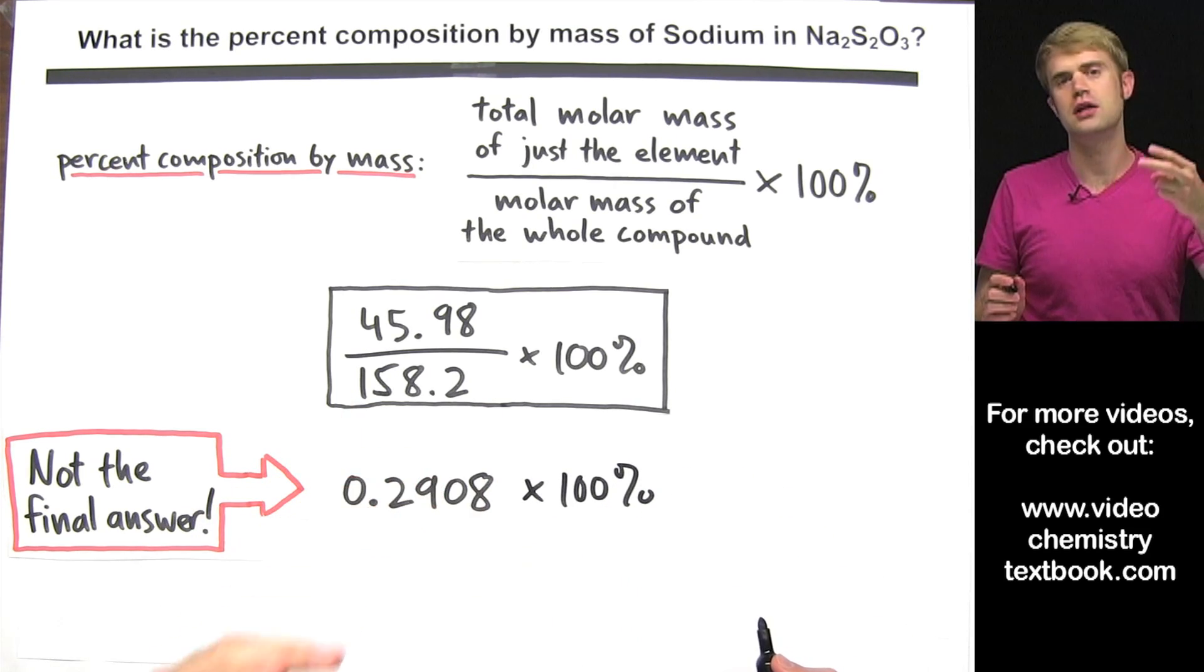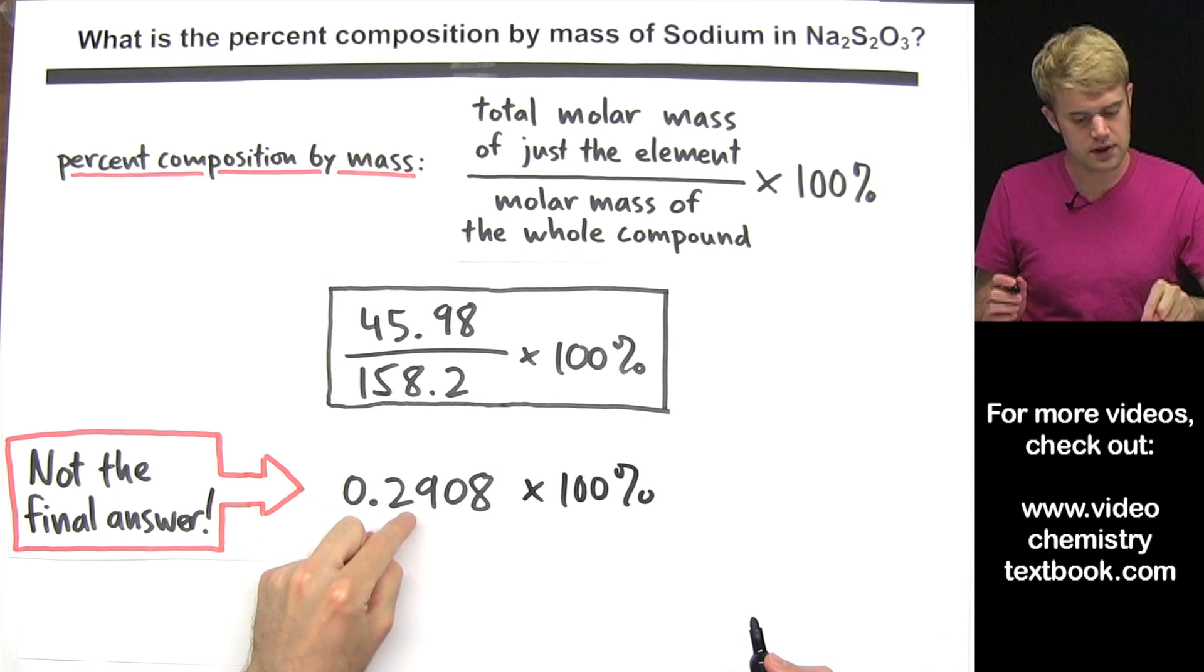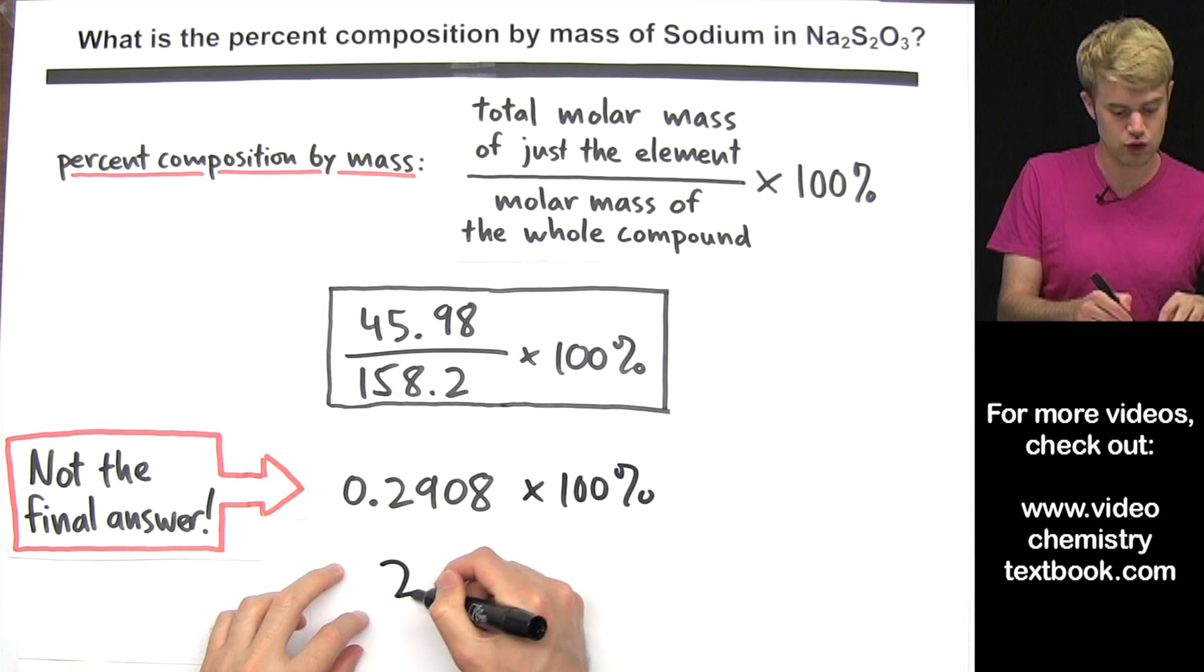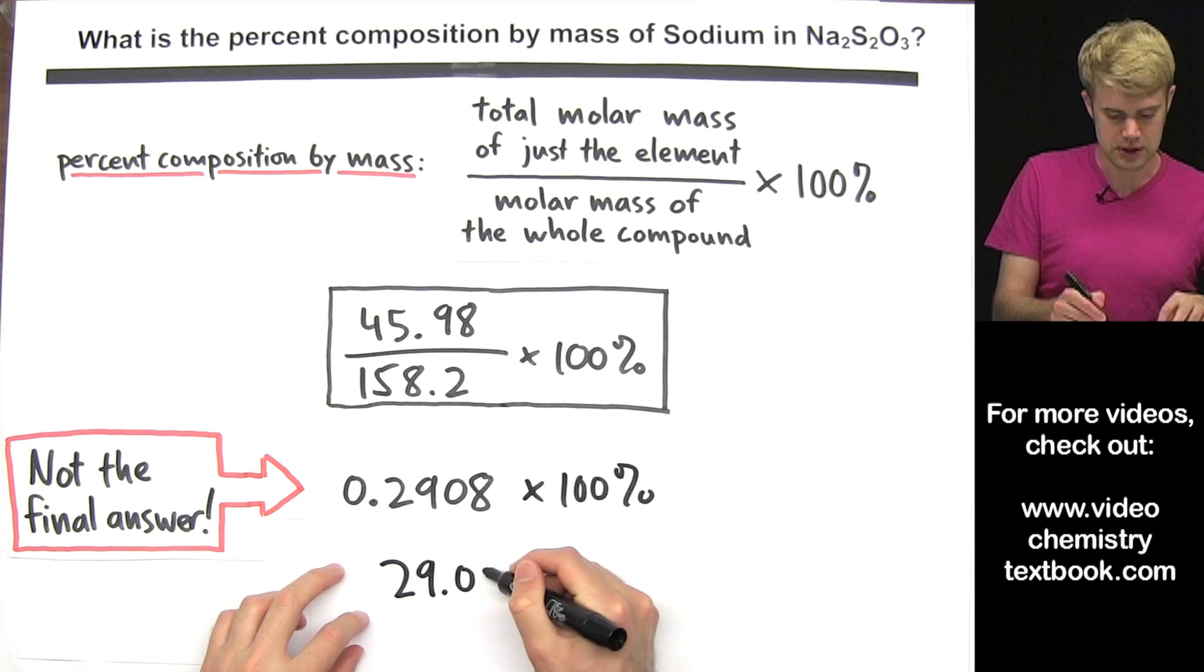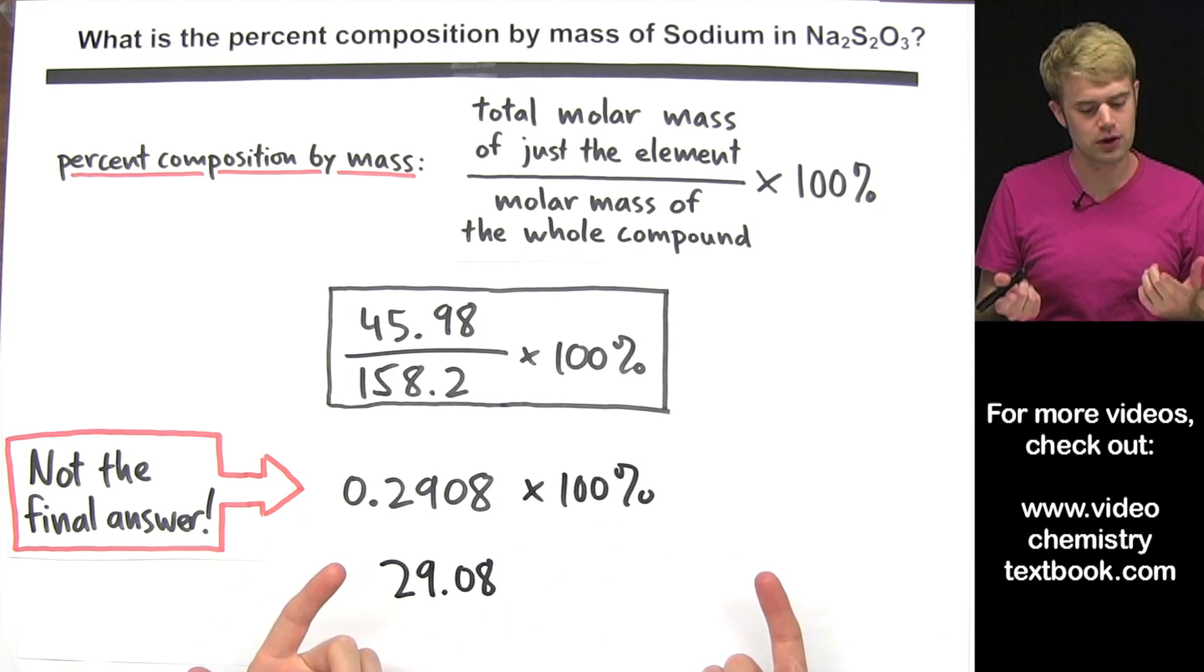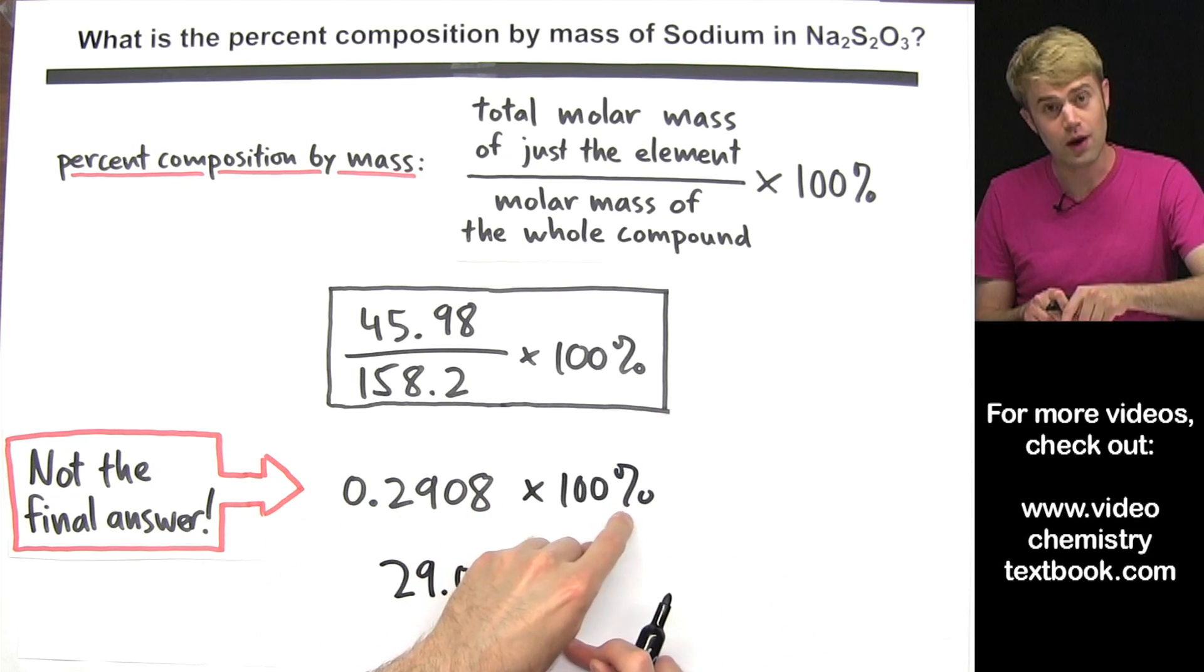Multiplying this number by 100% is going to do two things. First it's going to move the decimal place over two spots to the right so we're going to get 29.08, and just as importantly, it's going to turn this number into a percentage.